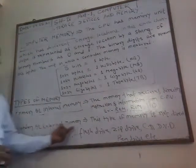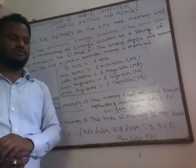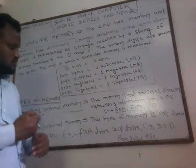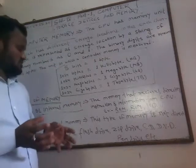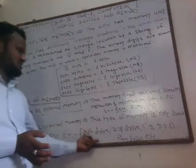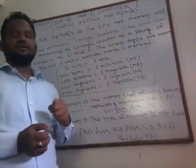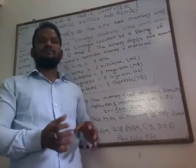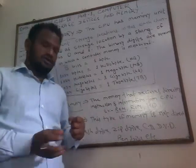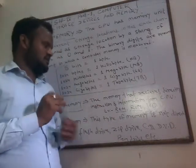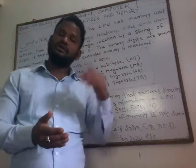Secondary or external memory is a type of memory that is not directly processed by the CPU, but we can install it and then run it. There are many storage devices such as flash drive, pen drive, zip drive, CD or DVD. Data stored in external memory is not deleted when the computer is powered off, unlike primary memory where data can be lost when the system is suddenly stopped.